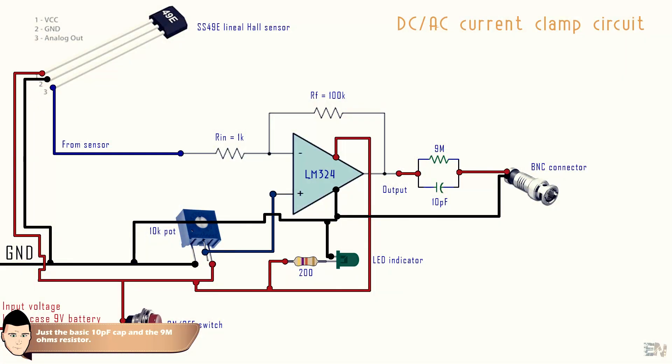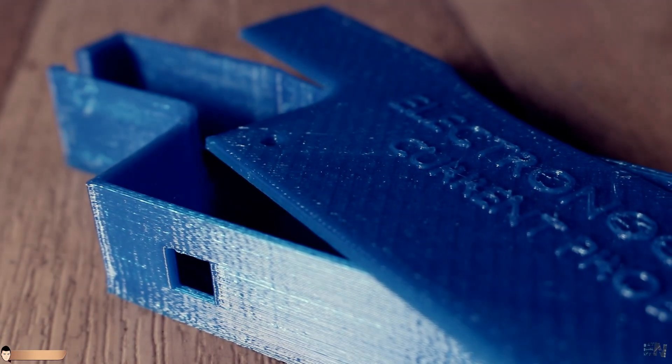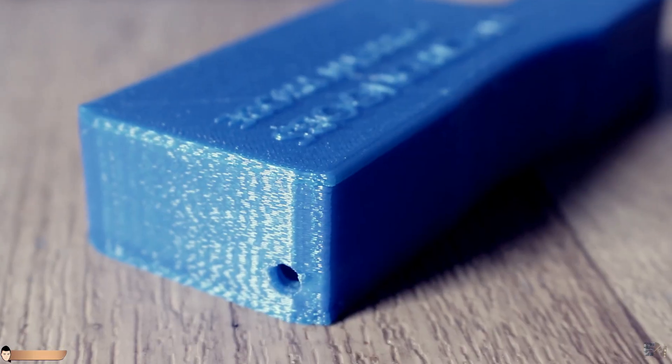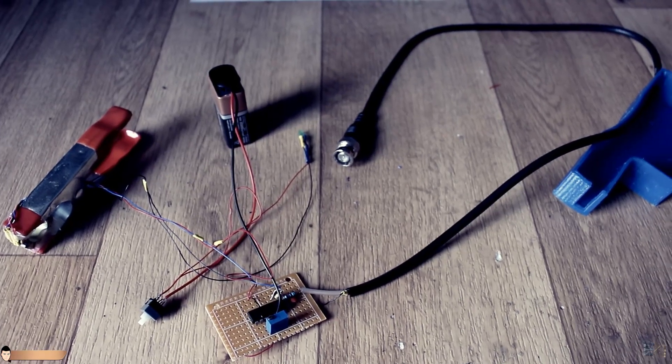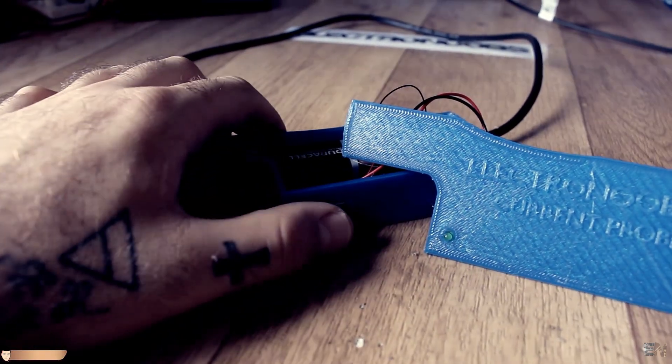The 3D printed case has holes for a switch and an LED indicator. You could download the final schematic from a link in the description. I place all the components inside of the 3D printed case. Before I close it, I have to calibrate the probe.